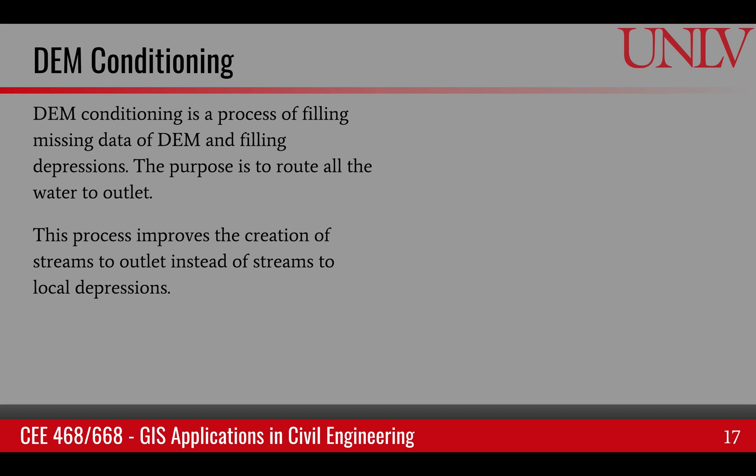The basic steps in watershed delineation start with DEM conditioning. DEM conditioning is a process where we fill all the missing data gaps in the DEM. Because if there is a missing point in the DEM, the slope at that point will be undefined, which will result in everything going towards that point — it will serve as a sink. So we want to remove or fill those kinds of points. We also don't want artificial depressions that would lead all the streams to go to that depression.